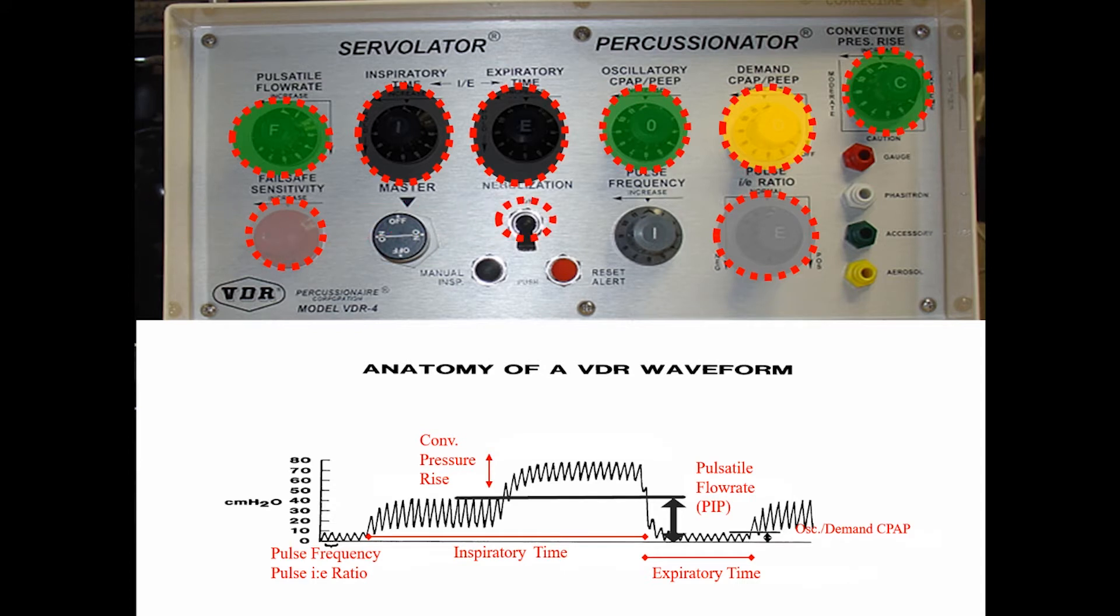I turn my nebulizer on. I have a pulse frequency control. So I can control the amount of high-frequency pulses throughout both cycles of ventilation. We typically use between 400 to 700 high-frequency pulses with the ventilator. I have a reset for in case a line gets pinched and the alarm goes off. And every ventilator has a manual inspiratory button.